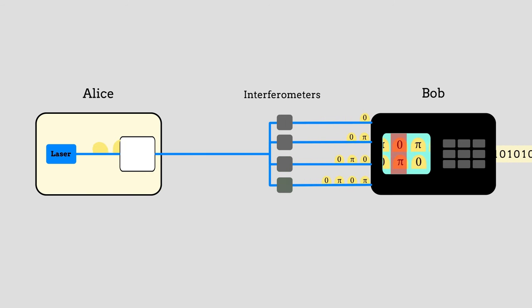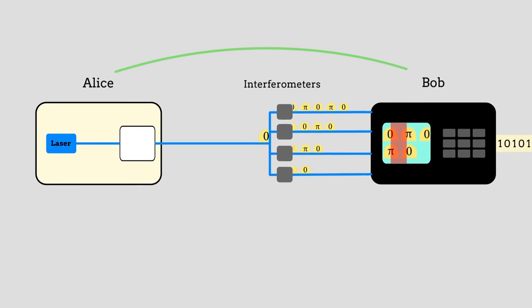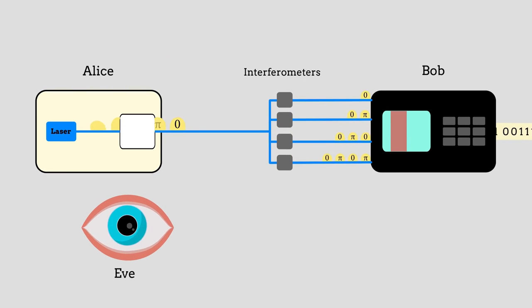Bob then reconstructs the key based on the detection patterns and reads his results, except for the key itself, back to Alice. Because the pulse train is very weak, Eve cannot simultaneously read all possible reconstructed keys. The choice of which reconstructed key is used by Alice and Bob depends on the random choice of the interferometer.